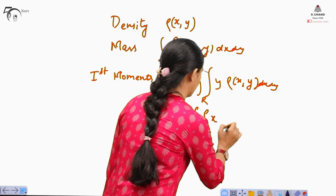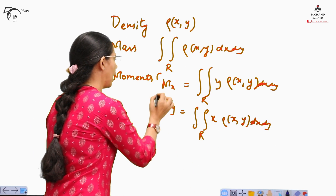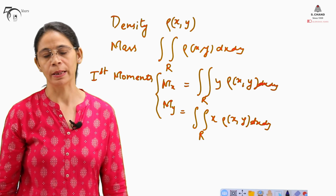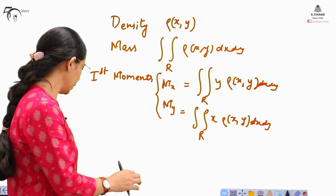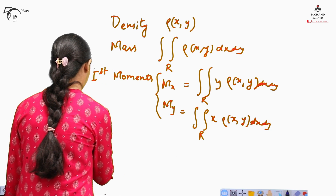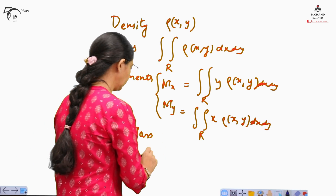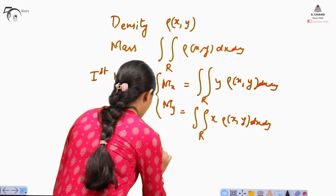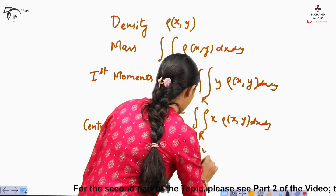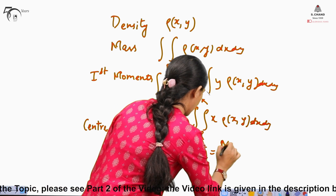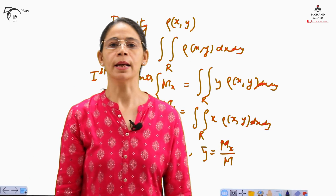Similarly, My is the double integral of x·rho(x,y) dx dy over region R. These are called the first moments and are used in calculating the center of mass. The center of mass coordinates are: x-bar equal to My over M, and y-bar equal to Mx over M.